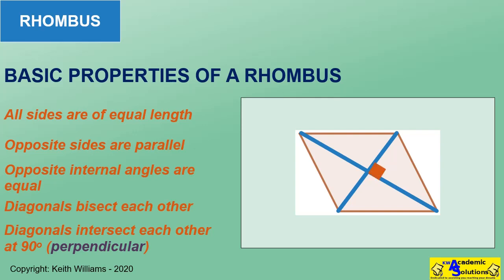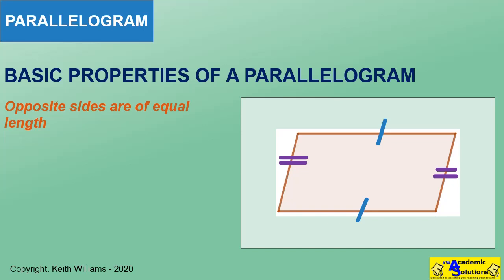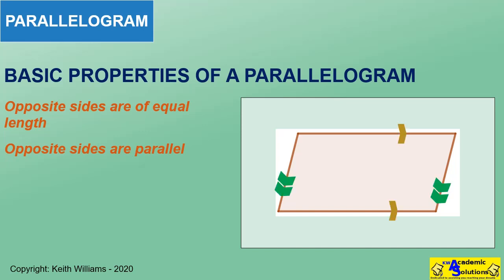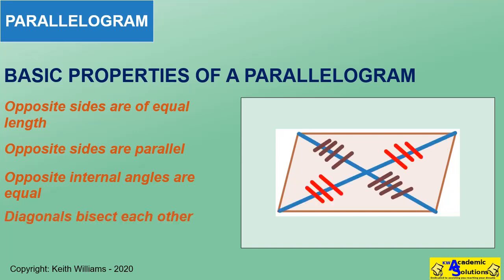The diagonals of a rhombus bisect one another at an angle of 90 degrees — or, we can say, they are perpendicular to each other. Opposite sides of a parallelogram are equal in length and parallel to each other. Opposite internal angles of a parallelogram are equal. The diagonals of a parallelogram bisect each other.